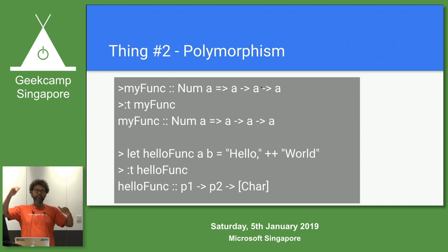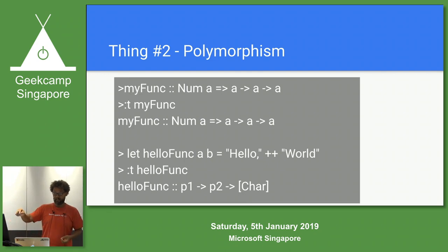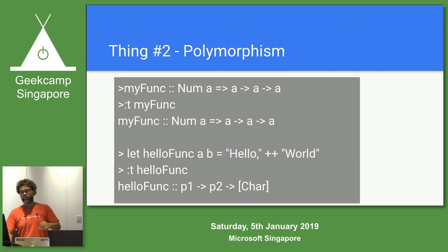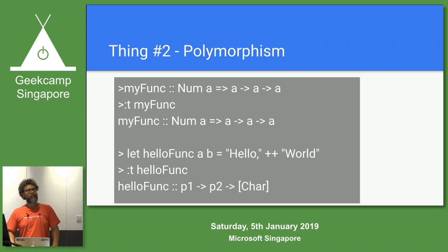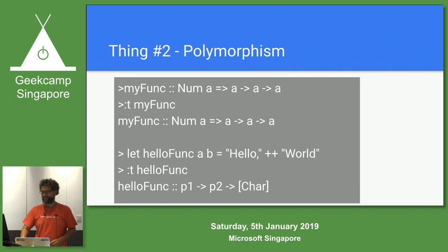There are levels of polymorphism within Haskell. One level is what you're looking at here — a type class constraint. There are two types: something called ad hoc polymorphism, and then there's parametric polymorphism. Two of the three names for these things are actually the same thing said differently, but if you want to dig a little deeper, go and check those out.